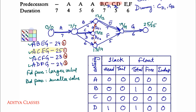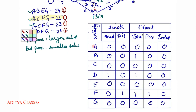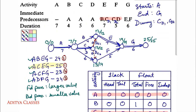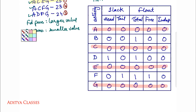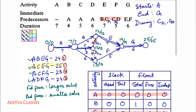Once again, let us check if all the critical activities have all slacks and floats as 0. The critical activities are A, C, E, G — and they all show 0. That is the special thing about critical activities: they do not have any leverage, neither for slack nor for float. This can act as a very good check. Thanks for watching. Bye-bye.